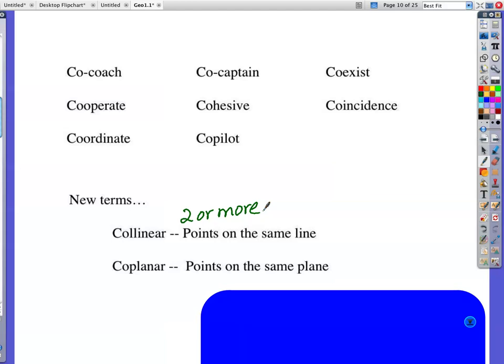Coplanar, two or more points on the same plane. Collinear, linear, line, planar has the word plane in there. Co is like more than one.